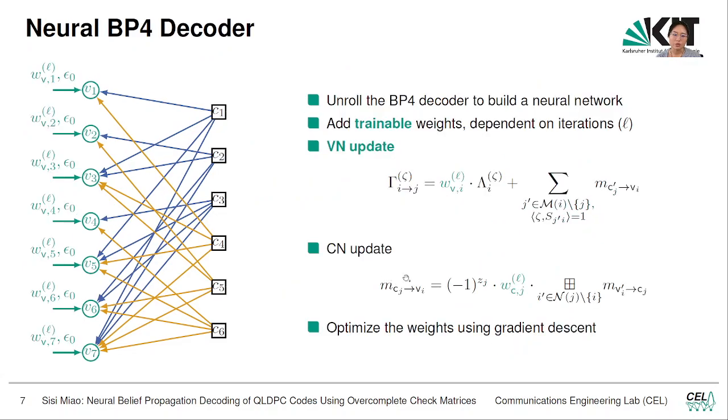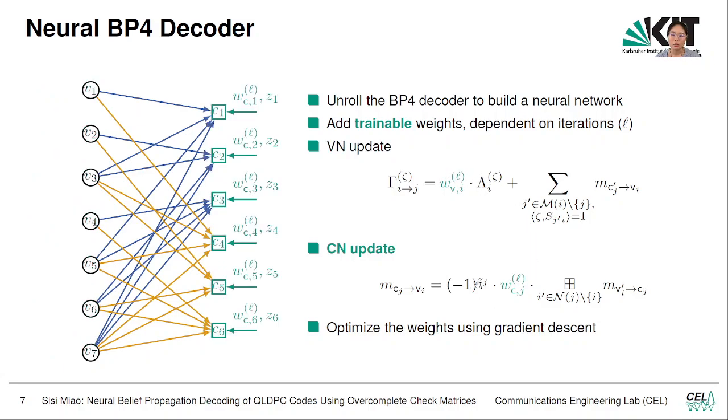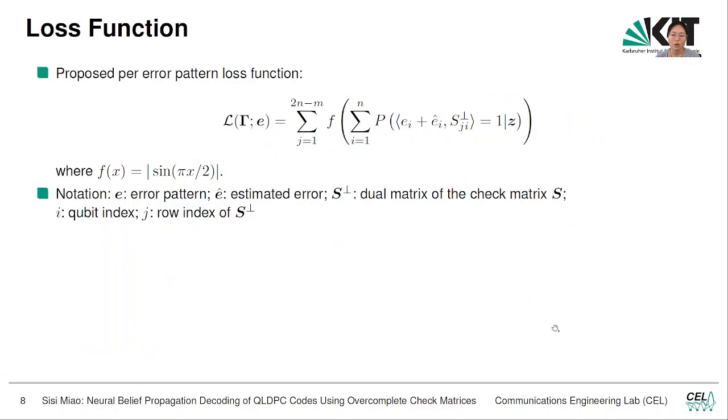Now we are ready to introduce our Neural BP decoder. The idea is, if we unroll the BP decoder, it will look like a neural network. What we can do is add trainable weights which are dependent on the iteration L. More specifically, in our case we introduce weights for the variable nodes—we introduce weights on the channel information. So we can see that for every variable node it has a weight together with the channel statistics as input. The weights are dependent on the index of the variable node and the number of iterations and index of the current iteration. Also, for the check node we introduced a weight that is applied directly to the message of the check node.